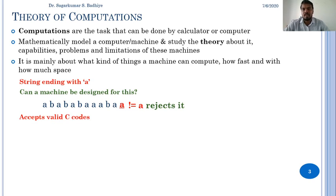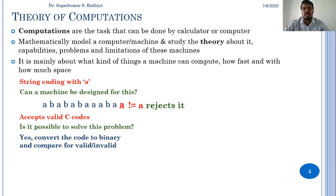Now, consider another example to design a machine that accepts a valid C code. Is it possible to solve this problem? Yes. Simple. Just convert the C code into binary and then compare the binary with the valid set of inputs. If it is equal, then we say that it is a valid C code.